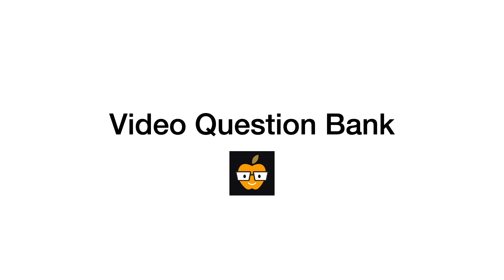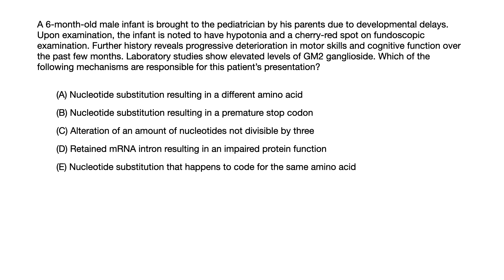Let's dive right into another high-yield practice question in my Video Question Bank series. A six-month-old male is brought to the pediatrician by his parents due to developmental delays. Upon examination, the infant is noted to have hypotonia and a cherry red spot on fundoscopic exam. Further history reveals progressive deterioration in motor skills and cognitive function over the past few months. Laboratory studies show elevated levels of GM2 ganglioside. Which of the following mechanisms are responsible for this patient's presentation?